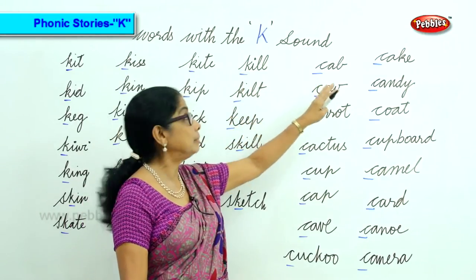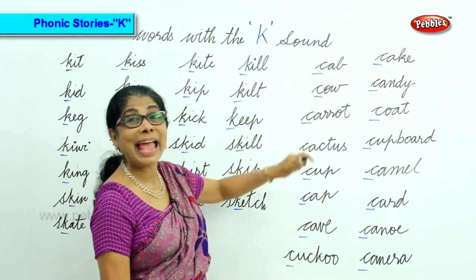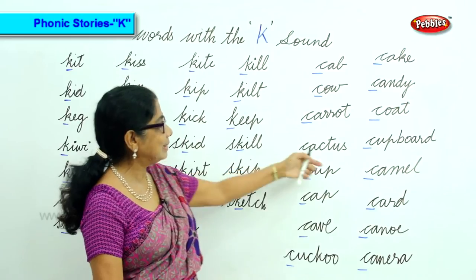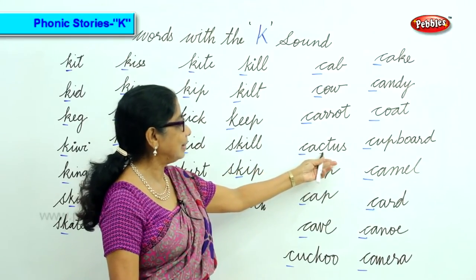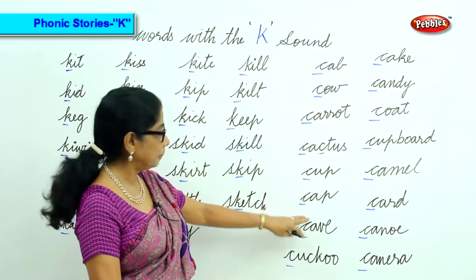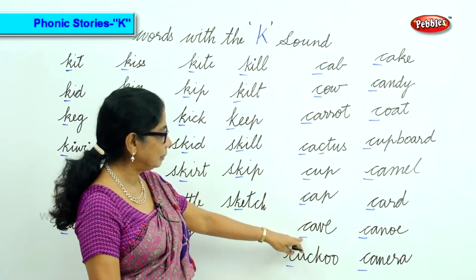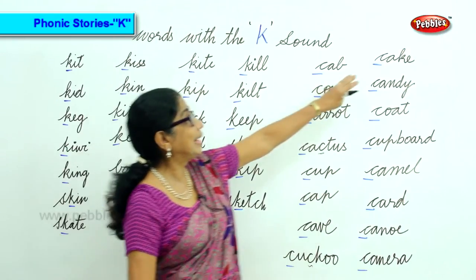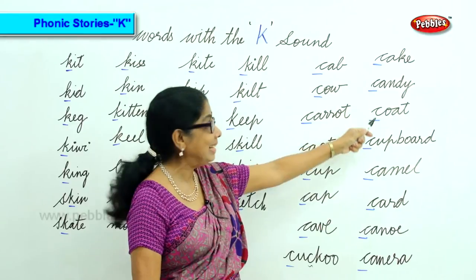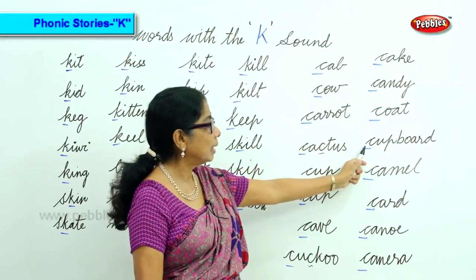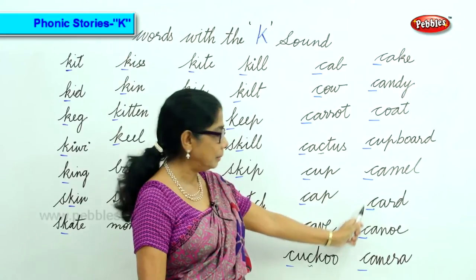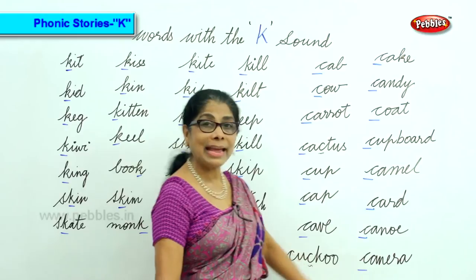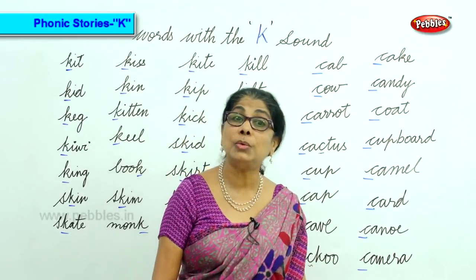K and C have the same sound. Words with the C sound: cab, cow, carrot, cactus, cup, cap, cave, cuckoo, cake, candy, coat, couch, cupboard, camel, card, canoe, camera — all K sound.